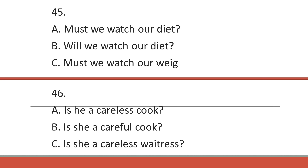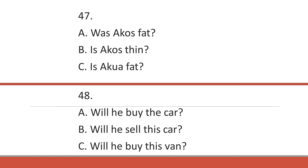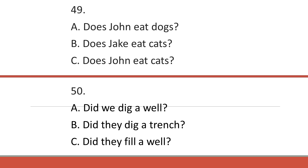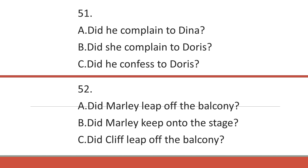Number 45. We must watch our diet. Number 46. He is a careless cook. Number 47. I cause his fat. Number 48. He will buy this car. Number 49. John eats cats. Number 50. They dug a well. Number 51. He complained to Doris. Number 52. Marley left off the stage.